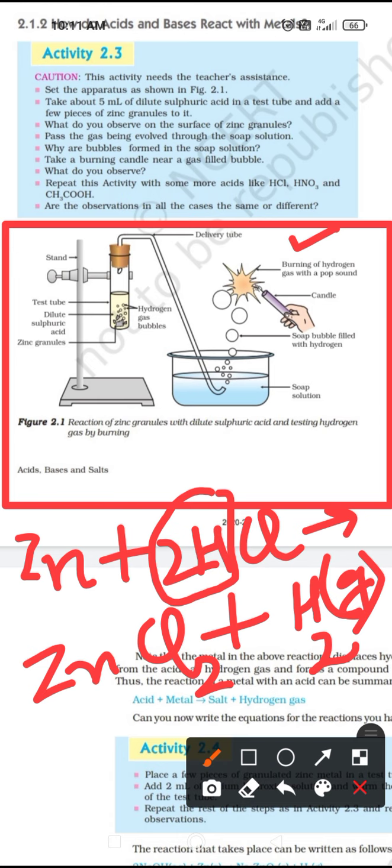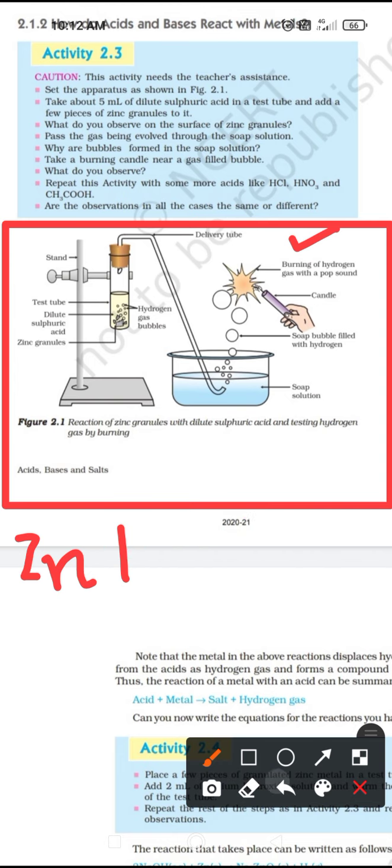So, here we have two reactants: metal and acid, and two products: metal salt and hydrogen gas. I hope it is now clear to you. We will try to understand the activity with the help of a practical also. I will upload a separate video of it and you can go through it for better understanding.